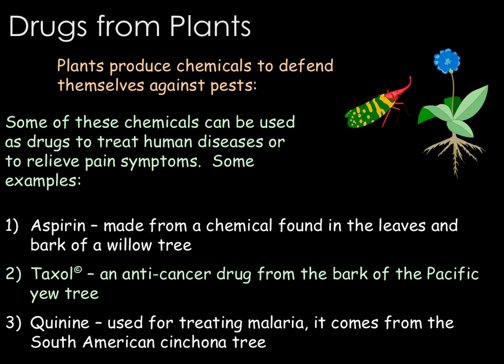Taxol, on the other hand, is a popular anti-cancer drug and is made from the bark of the Pacific yew tree. It was discovered when scientists were screening many plants looking for potential cancer treatments, and this drug was able to be synthesised. The final example is quinine, which comes from the South American cinchona tree. It is used to treat malaria, which is an infectious disease carried by mosquitoes.